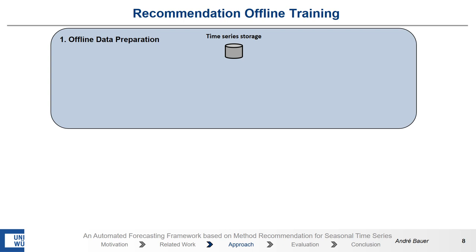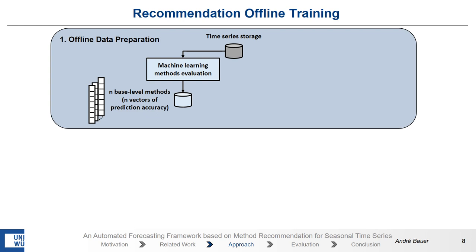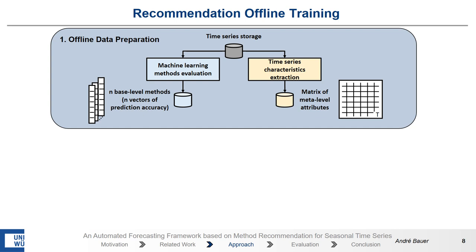Before we could use our recommendation systems, we have to train them offline. Therefore, we have a time-series storage, and for each time-series and each machine-learning method, we perform a forecast and evaluate it, and then we save this forecast into a database. These methods are called base-level methods, and for each time-series we have a vector with the prediction accuracies. At the same time, we extract for each time-series its characteristics and save them also in a database — these are called meta-level attributes. Then we join both datasets to a meta-level dataset, and this information can be used for the recommendation.